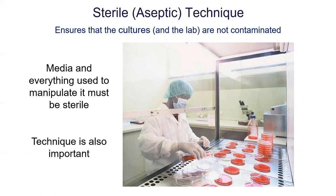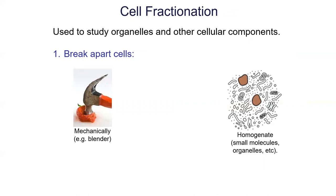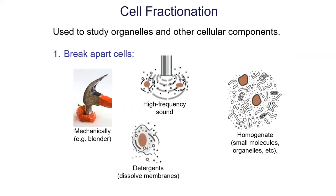The last thing I want to talk about is something called cell fractionation — another way to study cells and particularly their components and organelles. What you're trying to do with cell fractionation is, A, break apart the cells, and B, separate out the organelles. First step: break apart cells. You can do this mechanically with a blender, using sonication — high-frequency sound — or using detergents. You then get what's called the homogenate, which is a mixture of all the molecules and organelles from what you just broke apart.